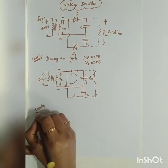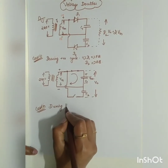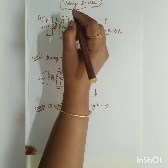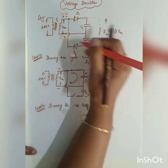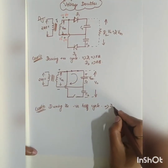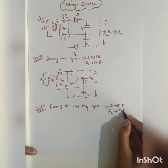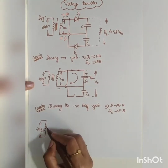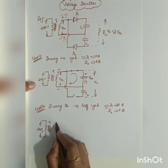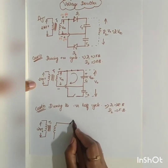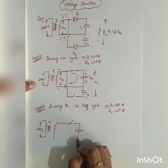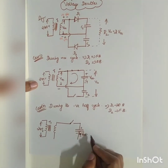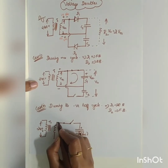For Case 2, during the negative half cycle of the input signal, the polarity reverses — here it is negative and here it is positive. In this condition, diode D1 will be reverse biased and diode D2 will be forward biased. Capacitor C1 is already charged to Vm.